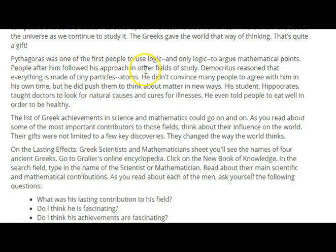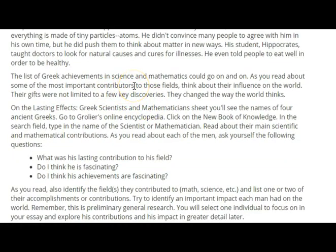Pythagoras was one of the first people to use logic and only logic to argue mathematical points, and people after him followed that approach in other fields of study. Democritus reasoned that everything is made of tiny particles — atoms — and while he didn't convince many people in his own time, he pushed them to think about matter in new ways. His student Hippocrates taught doctors to look for natural causes and cures for illnesses and told people to eat well in order to be healthy. The list of Greek achievements in science and math could go on and on, and their gifts changed the way the world thinks.